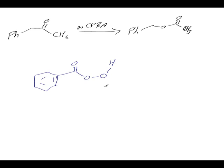And what that means — it's meta-chloro, so it's meta-chloroperbenzoic acid, and that's MCPBA. What that does is it makes this oxygen here slightly delta-positive, because the electrons are being withdrawn into the carbonyl. If you look at the resonance structure, that oxygen donates electrons, making this oxygen electron-deficient.